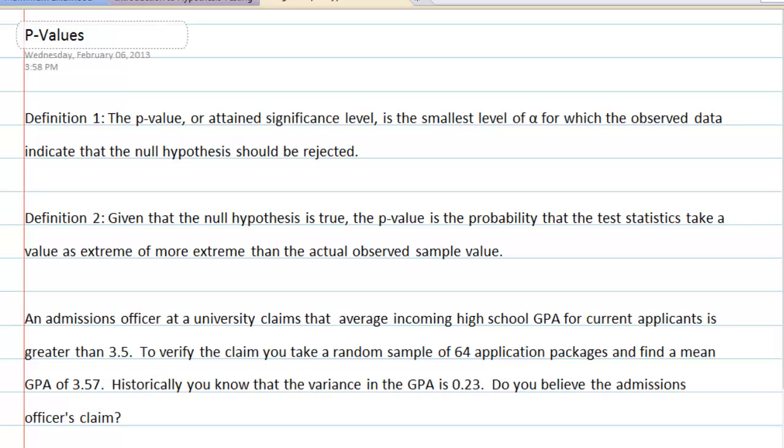This video is on p-values. We're going to start with two definitions. The first definition is the p-value, or attained significance level, is the smallest level of alpha for which the observed data indicate that the null hypothesis should be rejected.